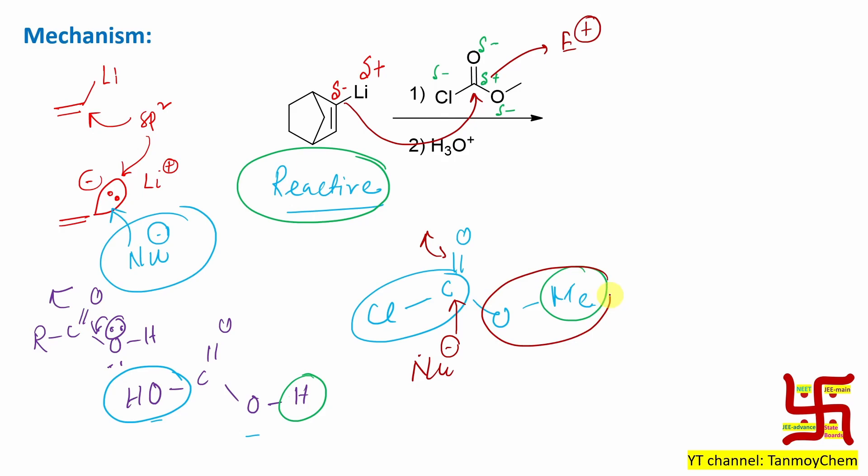Either OMe will leave or Cl will leave. If OMe leaves, it will leave as OMe minus. If Cl leaves, it will be Cl minus. Remember, Cl minus is more stable because chlorine is a group 17 element. So negative charge on it is very stable. But OMe minus is not that much stable compared to this. And not only that, it depends on which is actually a good leaving group. Cl minus is actually a relatively better leaving group compared to OMe minus. So that's why this Cl minus will leave, not the OMe minus.